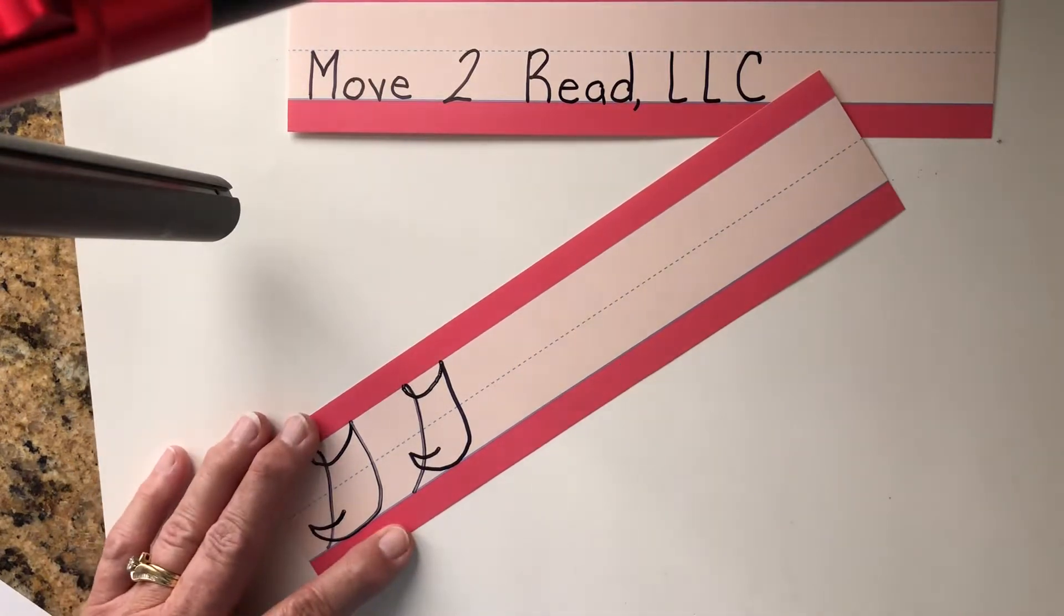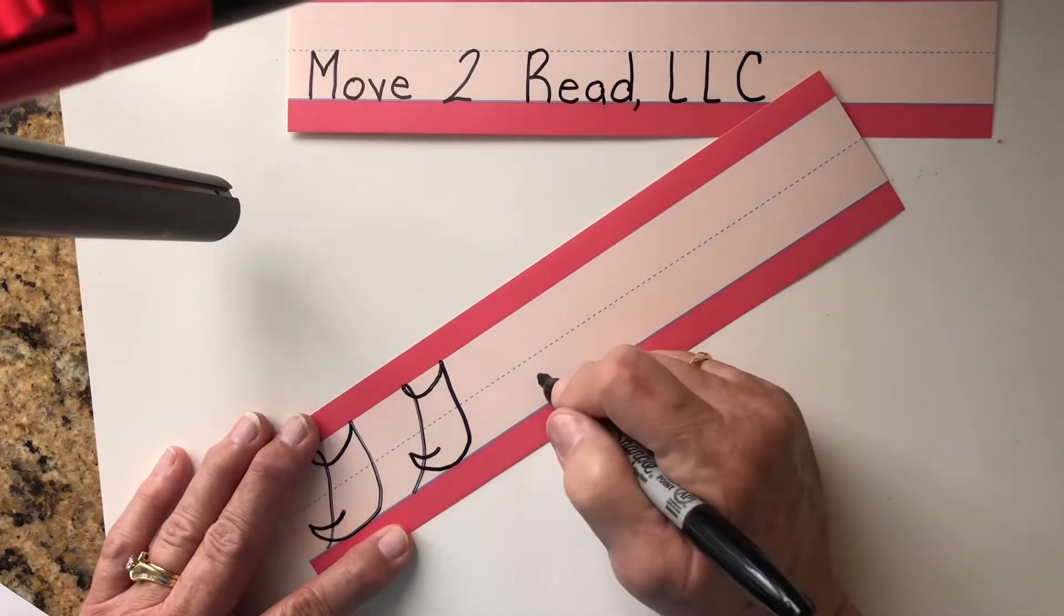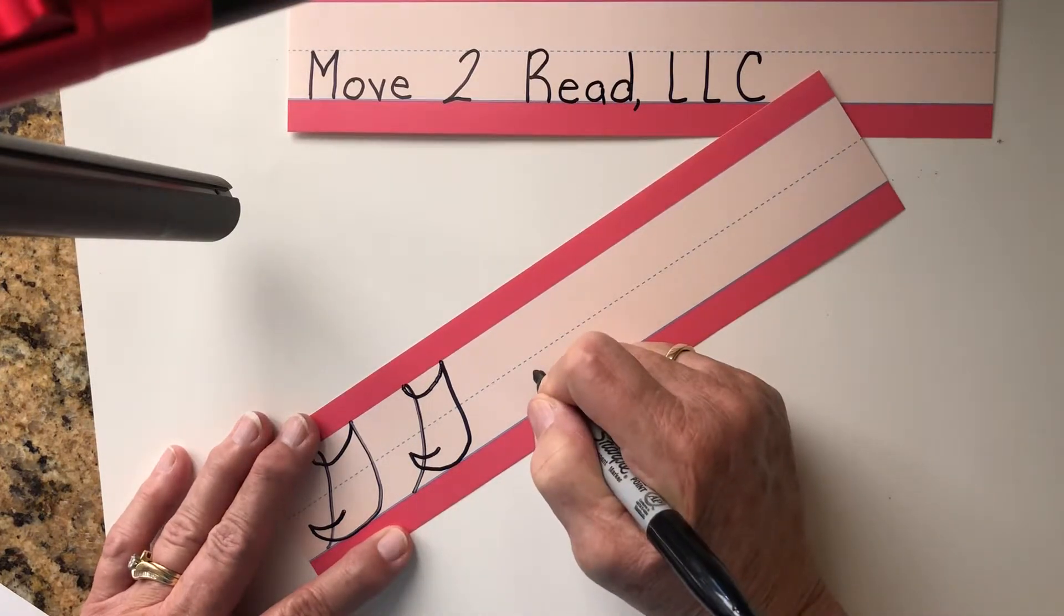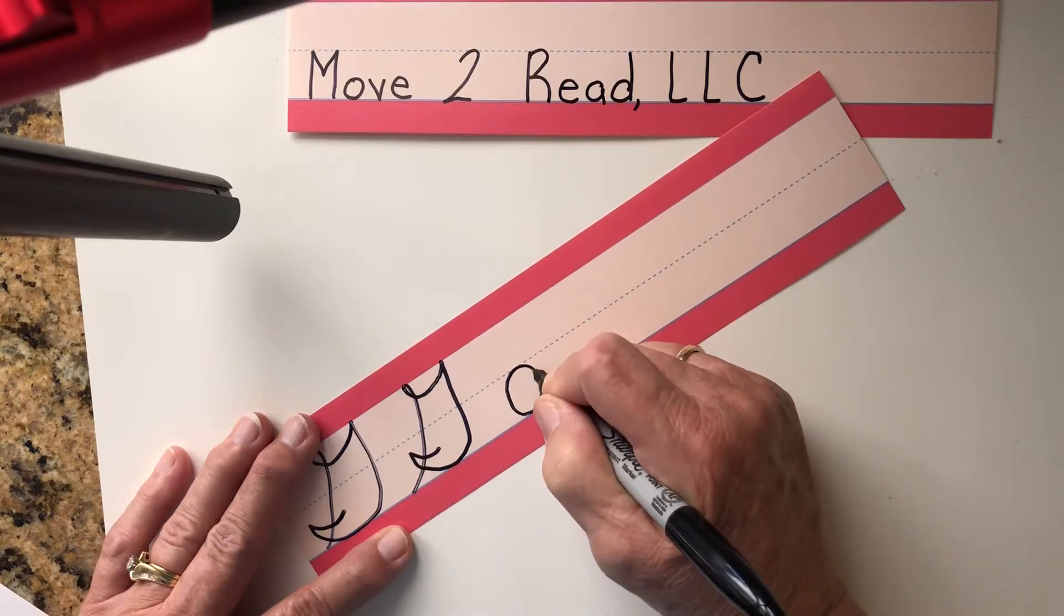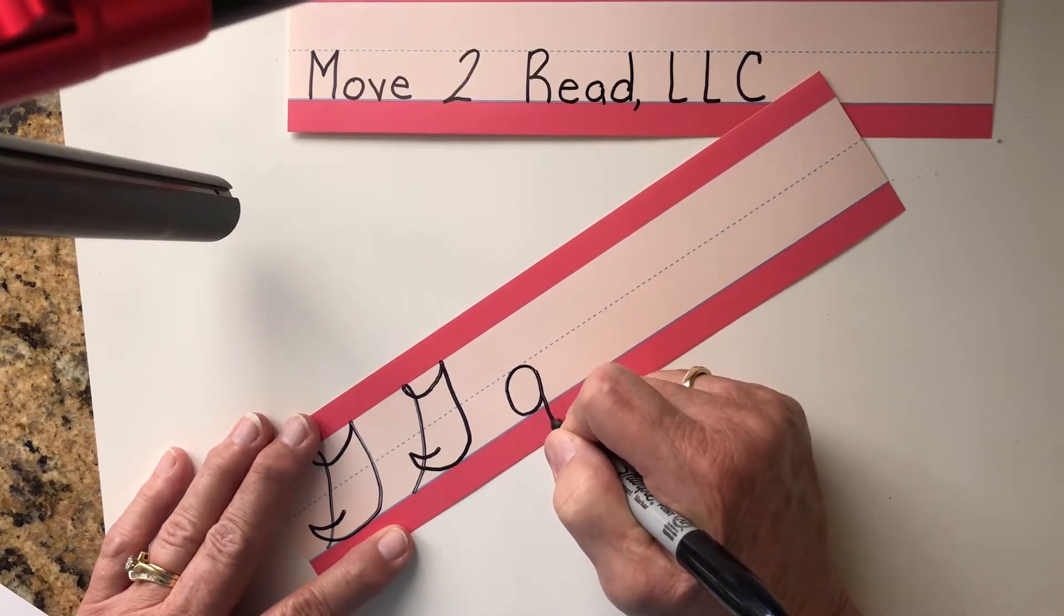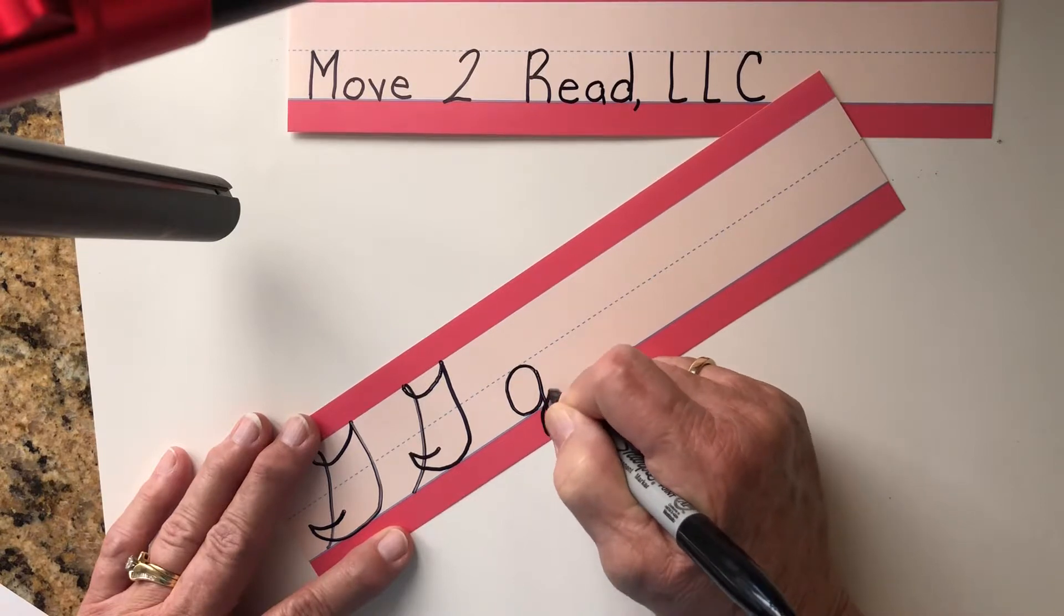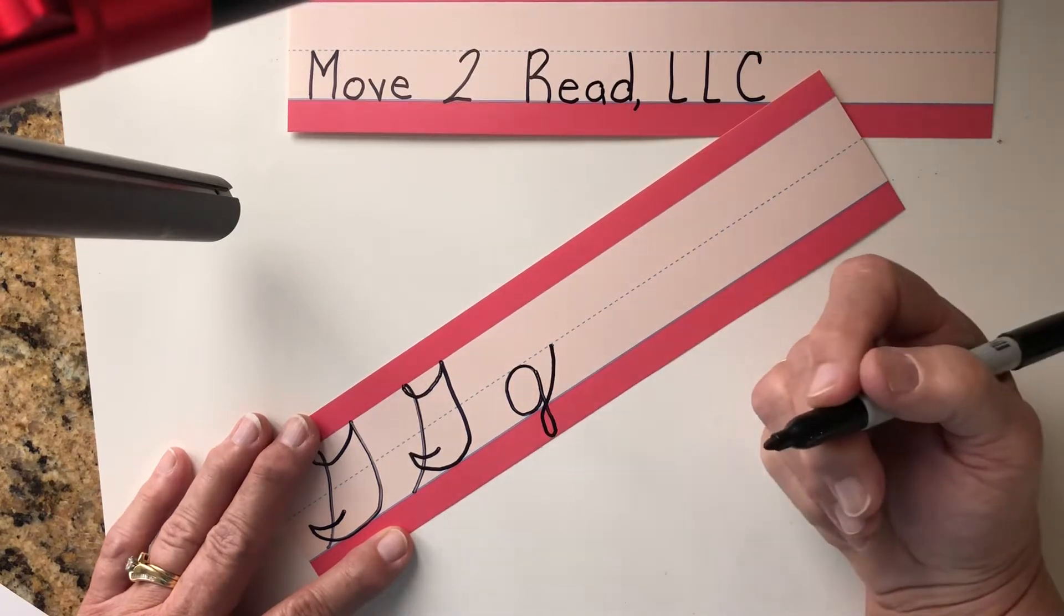Okay, now we are going to make our lowercase g. We're starting at 2 o'clock, we swing around, we make a circle, we join it, we fall down to where the bugs and the worms are, we make a little loop, and then we put our connector on.